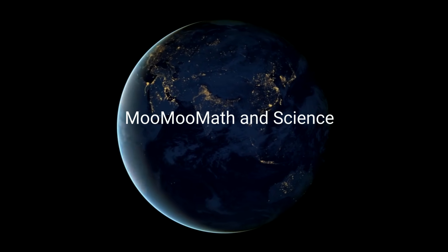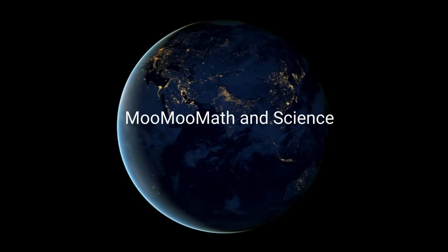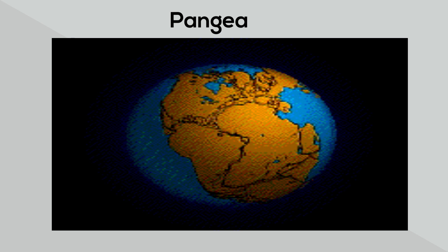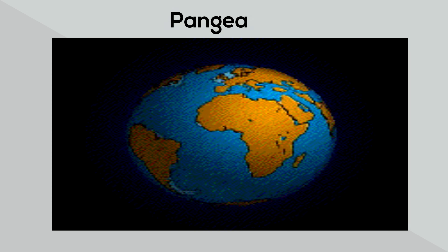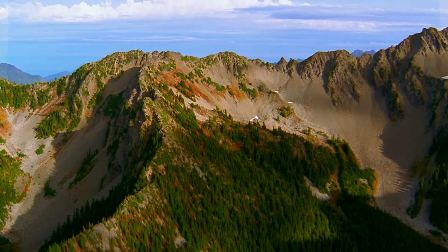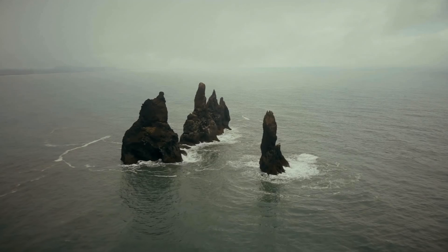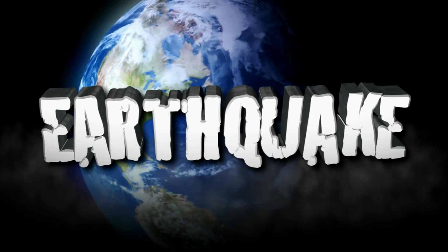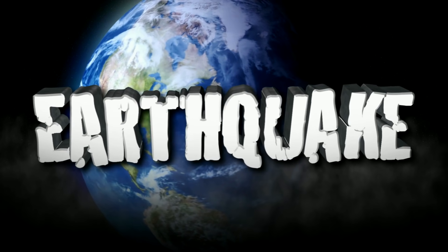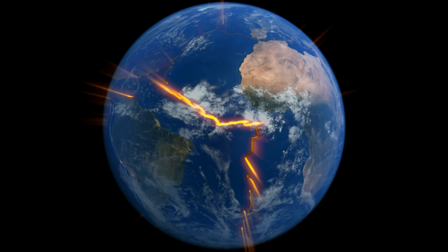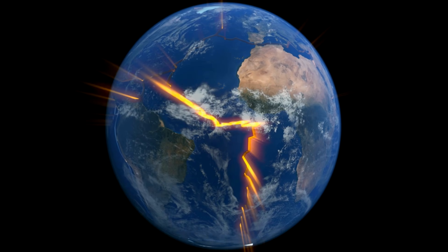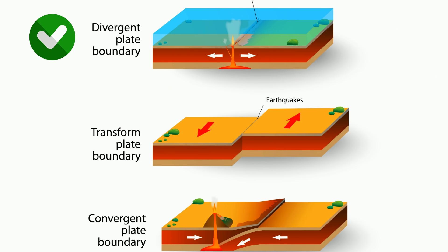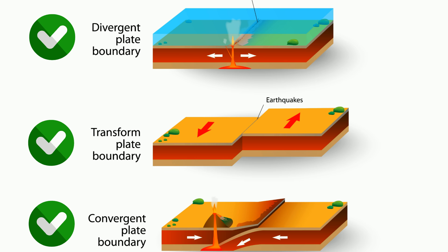Welcome to Moo Moo Math and Science, and Plate Boundaries. Some of the most dramatic changes in the earth's crust, like mountain ranges, new islands, or earthquakes, occur along plate boundaries. There are three types of plate boundaries: divergent boundaries, convergent boundaries, and transformed boundaries.